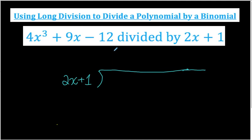Here's a quick video that's going to teach you how to use long division to divide two polynomials. Our goal in this lesson is to be able to divide 4x cubed plus 9x minus 12 by the binomial 2x plus 1. There are two ways to do this: long division or synthetic division. Synthetic division is a shortcut I'll show in a different tutorial — this tutorial is all about long division.